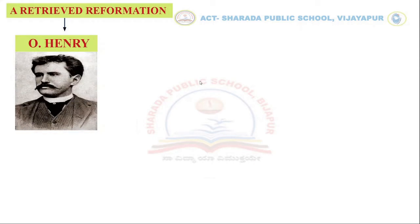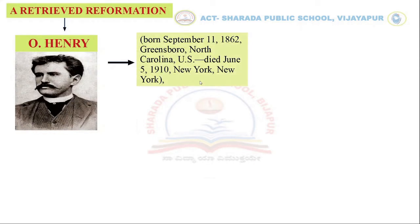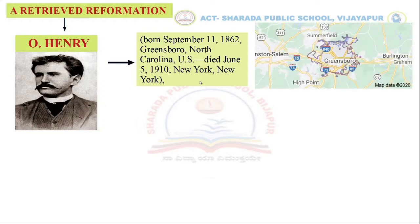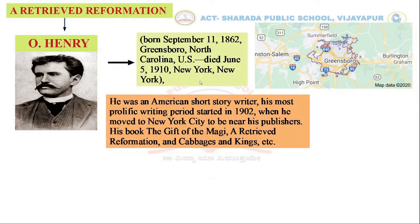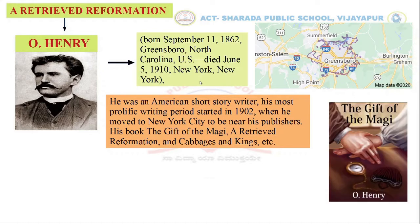O. Henry was born on September 11, 1862, in Greensboro, North Carolina, US, and died on June 5th, 1910, in New York. He was an American short story writer. His most prolific writing period started in 1902 when he moved to New York City to be near his publishers. His famous books include 'The Gift of the Magi,' 'A Retrieved Reformation,' and 'Cabbages and Kings.'